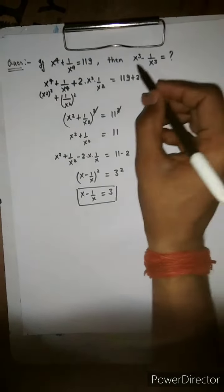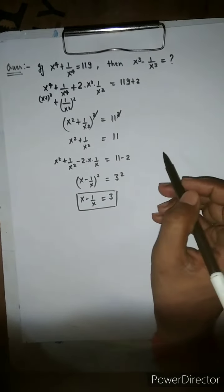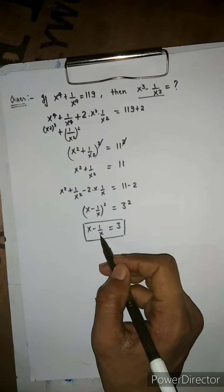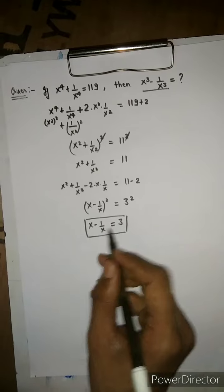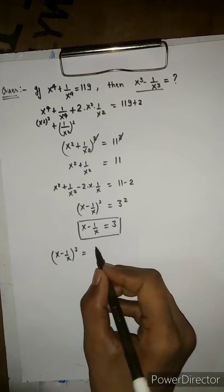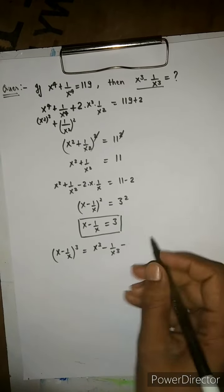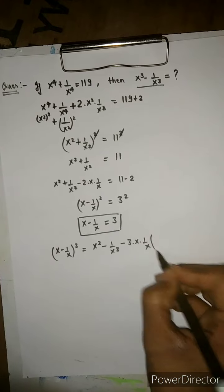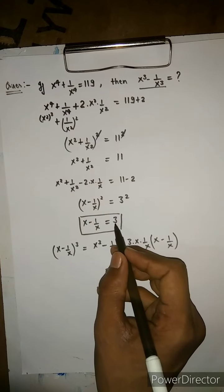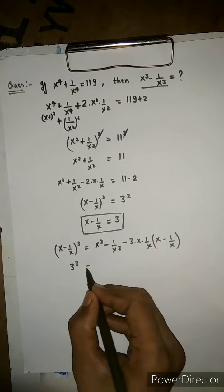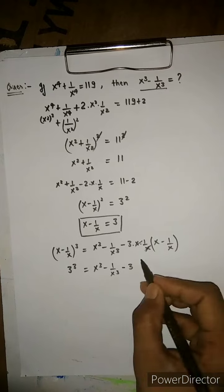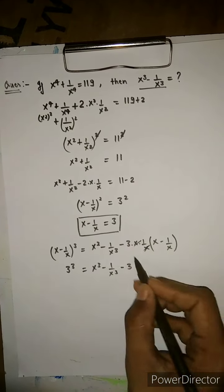Now we have to find the value of x³ minus 1 over x³. We know it comes from the formula of x minus 1 over x. On cubing both sides we get x minus 1 over x whole cubed, which equals x³ minus 1 over x³ minus 3 times x times 1 over x times x minus 1 over x. Here x minus 1 over x has value 3, so we get 3³ equals x³ minus 1/x³ minus 3, and x minus 1 over x is also 3.